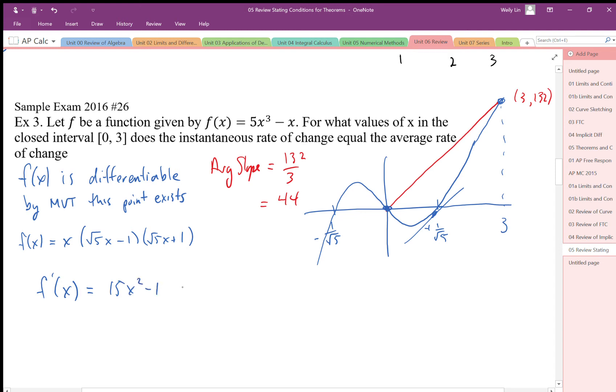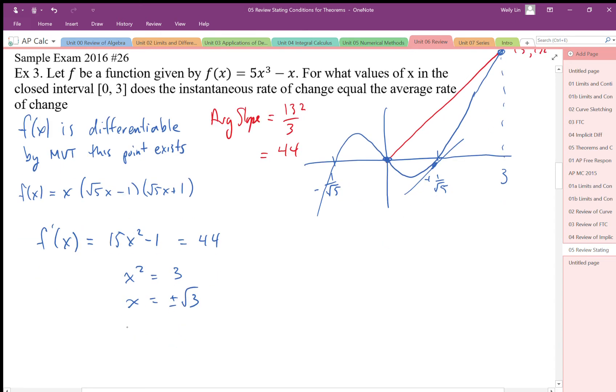Then we solve that equation. We get x² is equal to 3, x is equal to plus minus root 3. Well we're only in this interval here so we're just going to eliminate the negative value. So at x equals root 3 we know that we have...